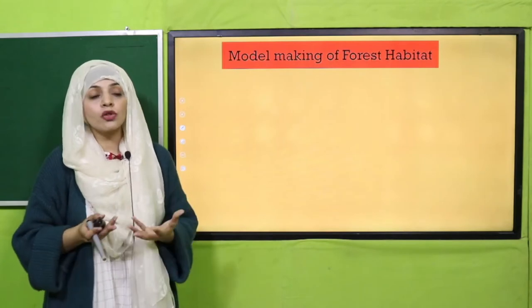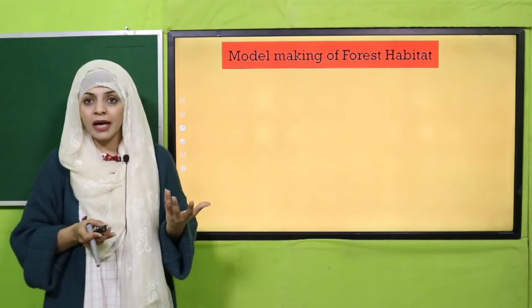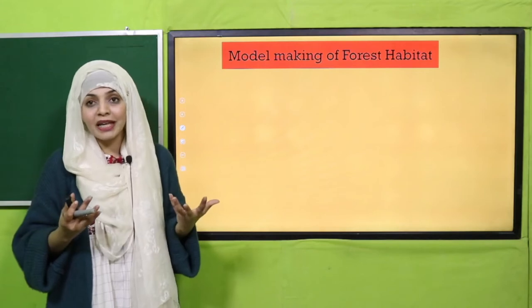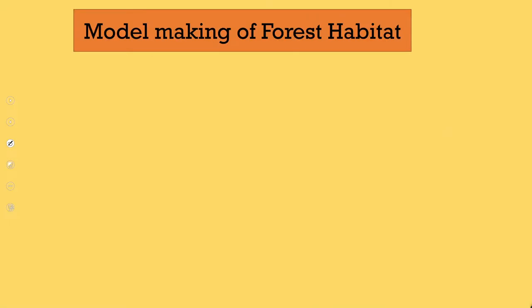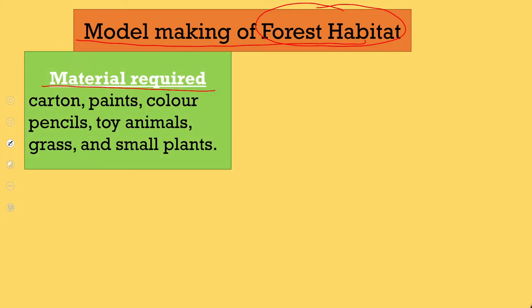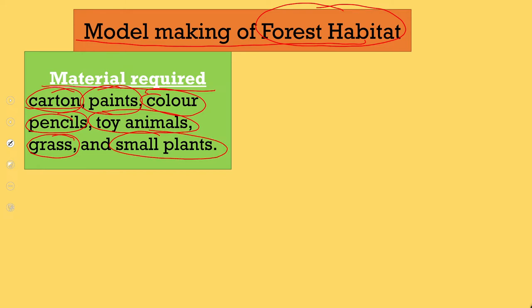I have also selected a habitat of my choice and prepared a model. But first let's look at the different steps of model making. I am making a forest habitat model. Here you can see the materials required: cotton, paints, color pencils, toy animals to show the animals, and real grass. I have also used some small plants to give a look of a forest.